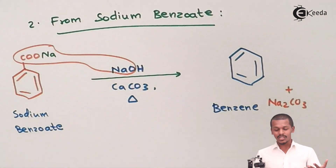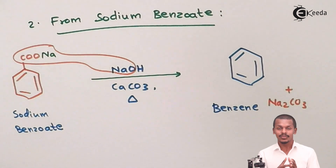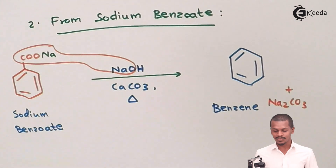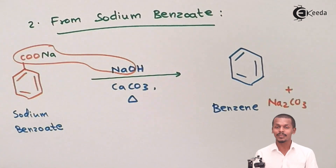So this is how we could prepare benzene from sodium benzoate, by using NaOH and CaCO₃, following a decarboxylation process.